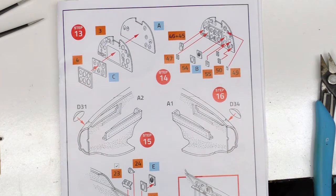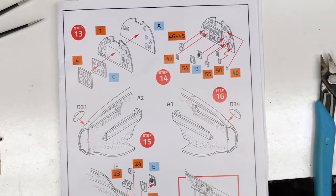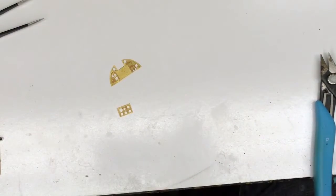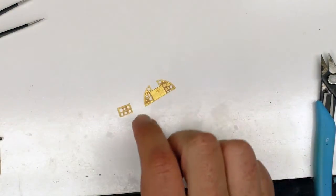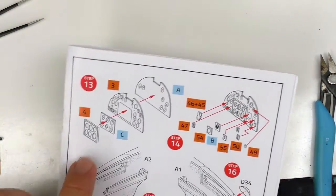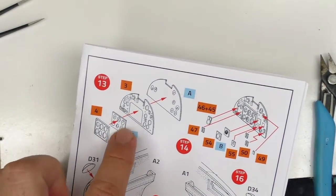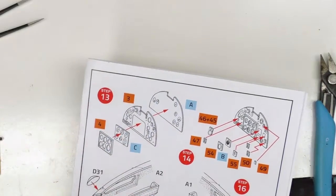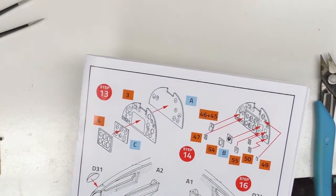So here we are back to step 13 to deal with the instrument panel. So if we're going to take the liberty of cutting out the panel itself and the sandwich panel that goes on top here, now we've also got to deal with the acetate gauges.